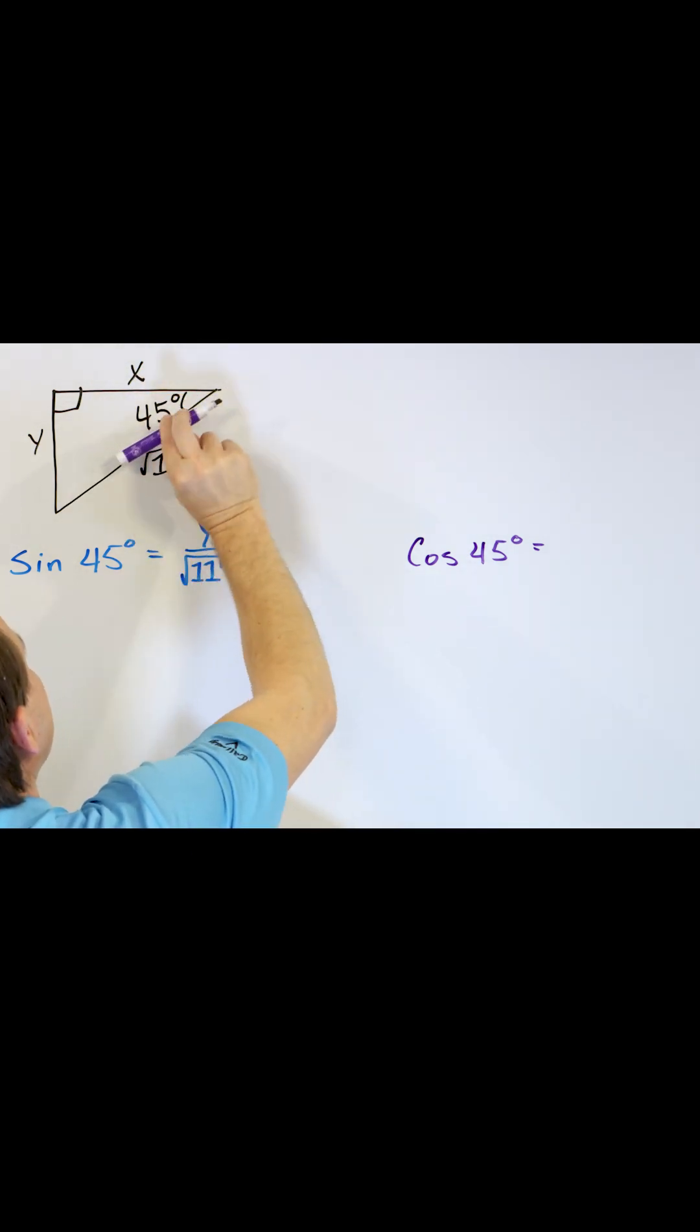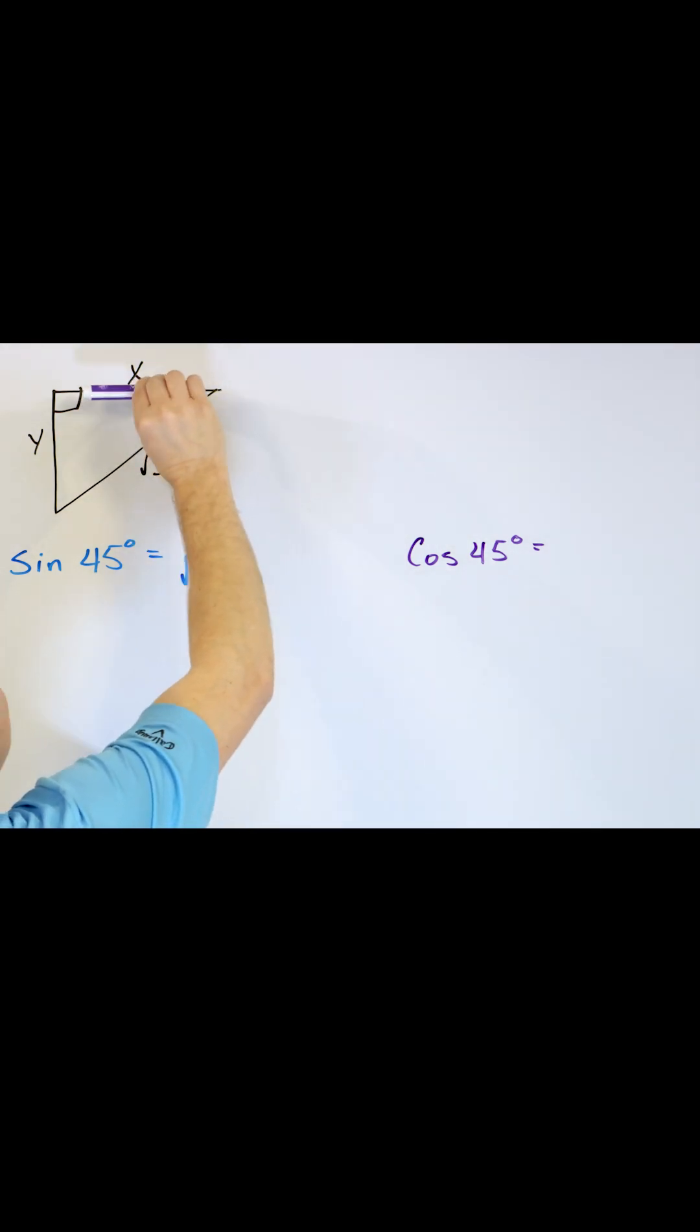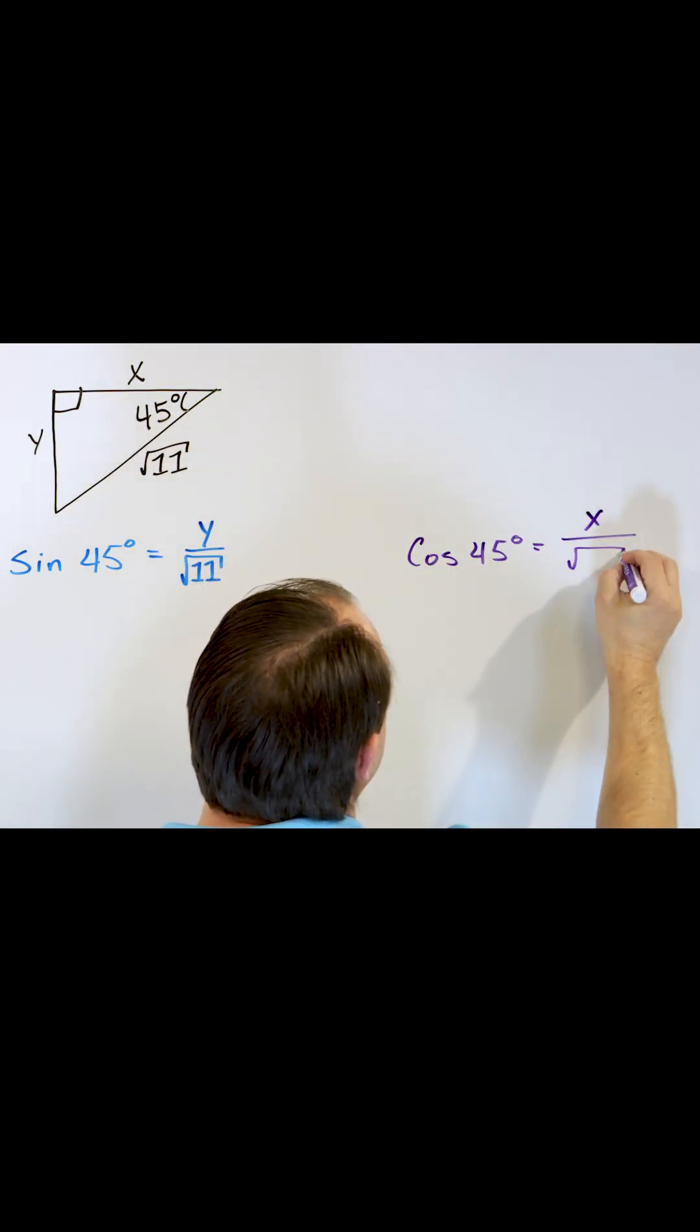The adjacent side can't be this one because this is the hypotenuse. The only side that can be adjacent is the x side over square root of 11.